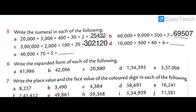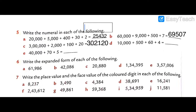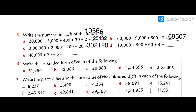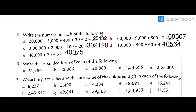Question 5d: ten thousand plus five hundred plus sixty plus four. Answer: ten thousand five hundred sixty-four — 10,564. Question 5e (last): fourteen thousand plus seventy plus five. Answer: fourteen thousand seventy-five — 14,075.